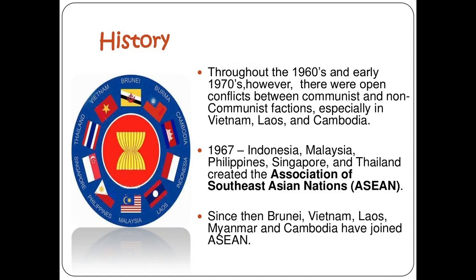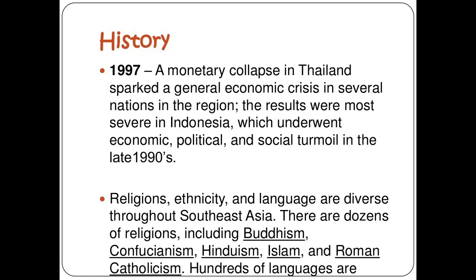Throughout the 1960s and early 1970s, there were open conflicts between communist and non-communist factions, especially in Vietnam, Laos, and Cambodia. In 1967, Indonesia, Malaysia, Philippines, Singapore, and Thailand created the Association of Southeast Asian Nations, or ASEAN. Since then, Brunei, Vietnam, Laos, Myanmar, and Cambodia have joined. In 1997, a monetary collapse in Thailand sparked a general economic crisis in several nations in the region.